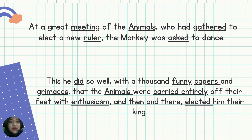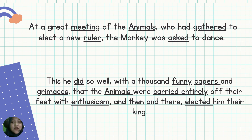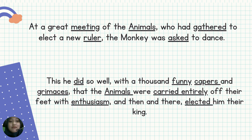Ada pun kayak misalkan ruler, dan then enthusiasm, entirely — ini adalah morpheme yang ditambah dengan suffix and prefix, alias derivational. Jadi kalau misalkan ditambah derivational, dia akan mengubah makna. Contoh, ruler ini berasal dari kata rule — rule itu artinya mengatur, tambah akhiran -er, ini jadi 'pengatur' — jadi akan mengubah makna kata tersebut.